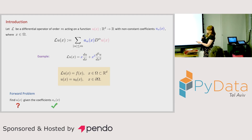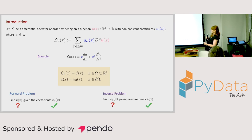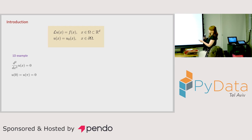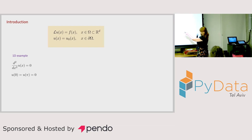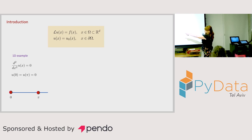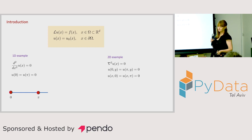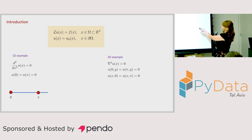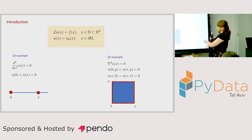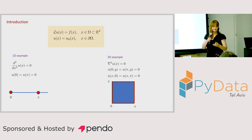In the forward problem, we want to find u given the coefficients A_alpha. In the inverse problem, we want to find the coefficients A_alpha given the measurement u(x). As a 1D example, we have the second derivative of u with respect to x and boundary conditions at two points. In 2D, we have the Laplacian of u with boundary condition zero on the boundary.